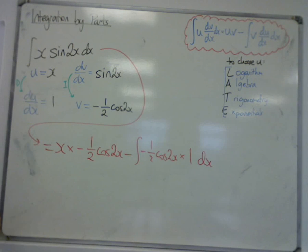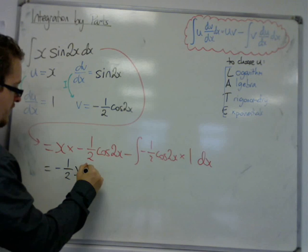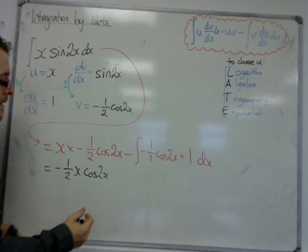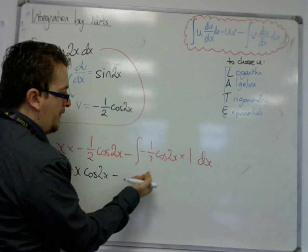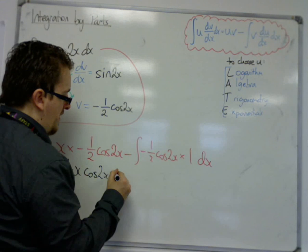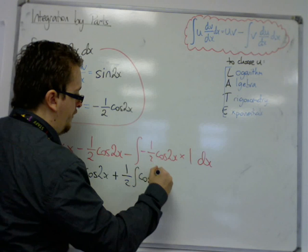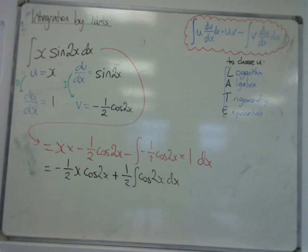So it looks a little bit nasty at the moment, so I'm going to tidy this up. Bring that minus half to the front, put the x and then the cos 2x. So that's that first term done. Then we've got this integral. Now we've got two minus signs here, so I'm going to bring that minus 1/2 out to the front. So that's going to make it to a plus 1/2 integral of cos 2x dx.